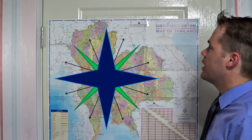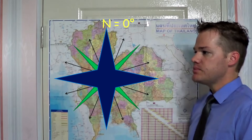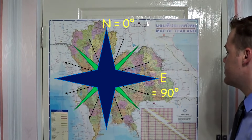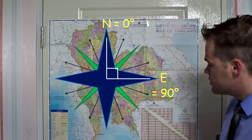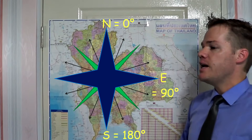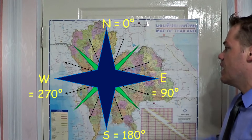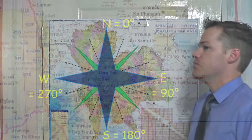Before we get to the bearing itself, I'm going to put the compass on the screen just very quickly. When we calculate a bearing we always start at North. North is zero degrees, East is exactly 90 degrees, South is 180 degrees, West is 270 degrees, and when you go all the way around to North it will be 360 degrees.